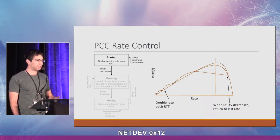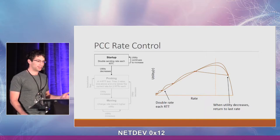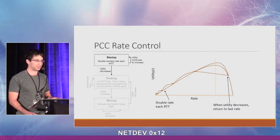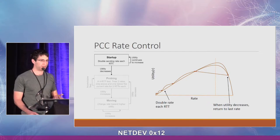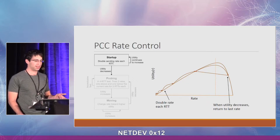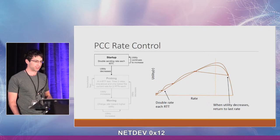The back-off isn't necessarily on the first loss. For instance, in an environment of random loss, the loss rate is the same across all rates being tested, so the startup will handle that better than TCP slow start.